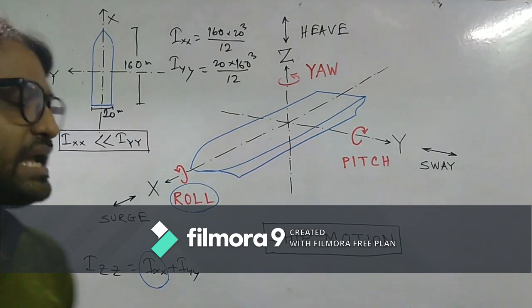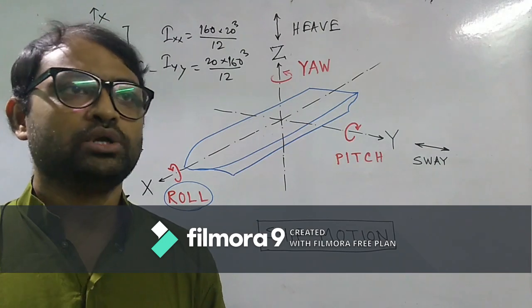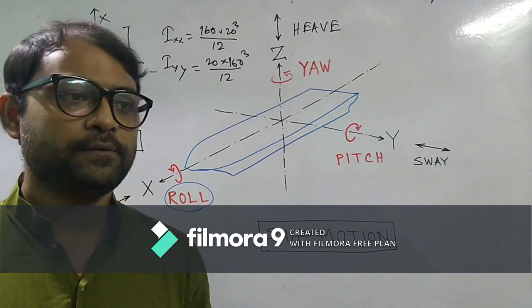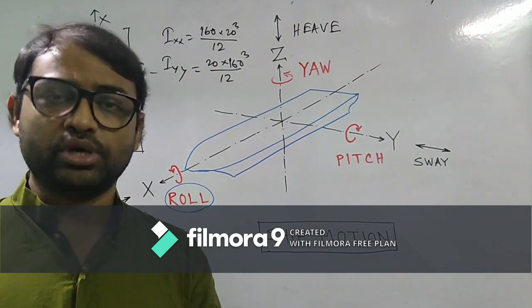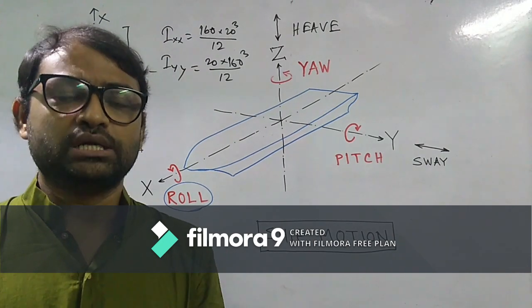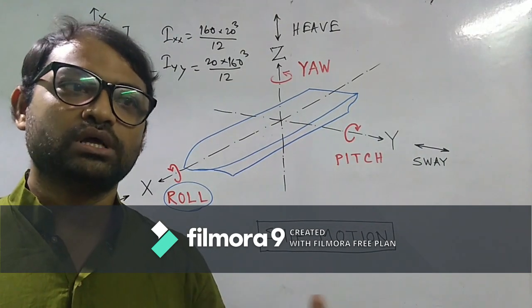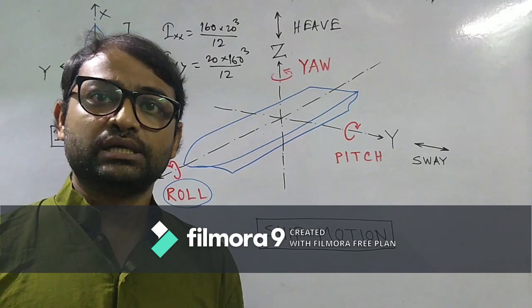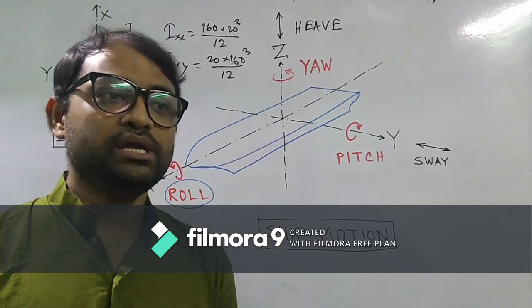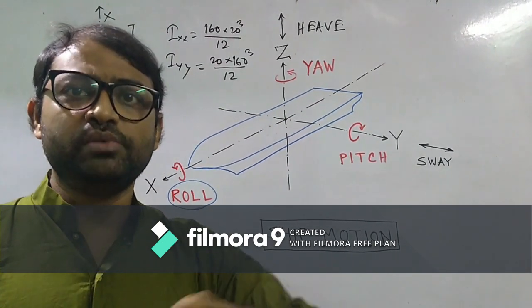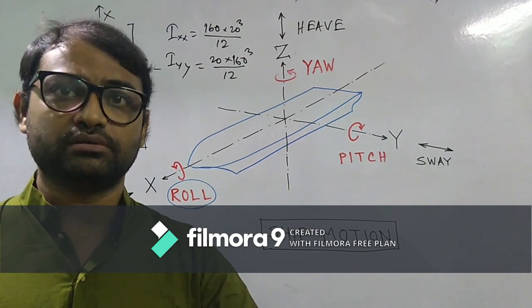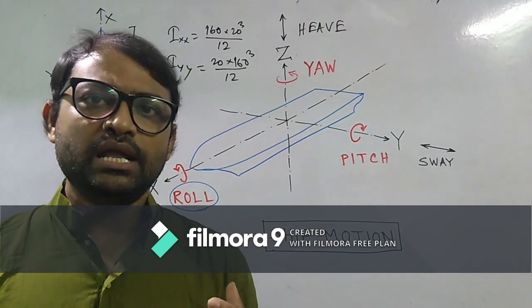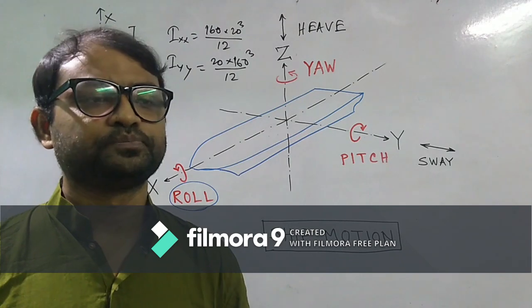Now here, what we can do or what as naval architects we used to do, that we used to calculate for any ship, we used to calculate the rolling frequency or rolling period. And that rolling frequency should be somewhat different from the frequency of the waves or the encountered forces, whatever is encountered by the ship itself. Those frequencies should be different. If they come closer, then there will be a resonance and the ship will be moving drastically or the rolling will be very much dangerous in that case particularly. So for rough sea, this is a very well-known problem and this is a very severe problem, and people are working worldwide on this particular issue.